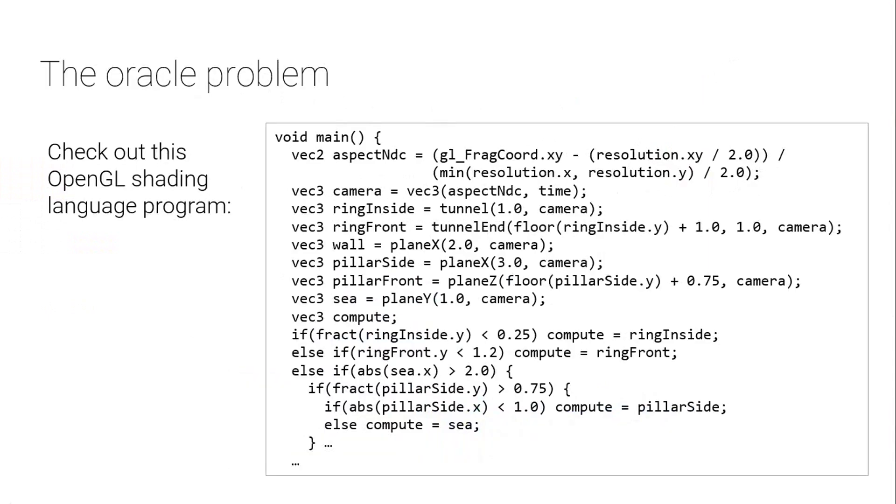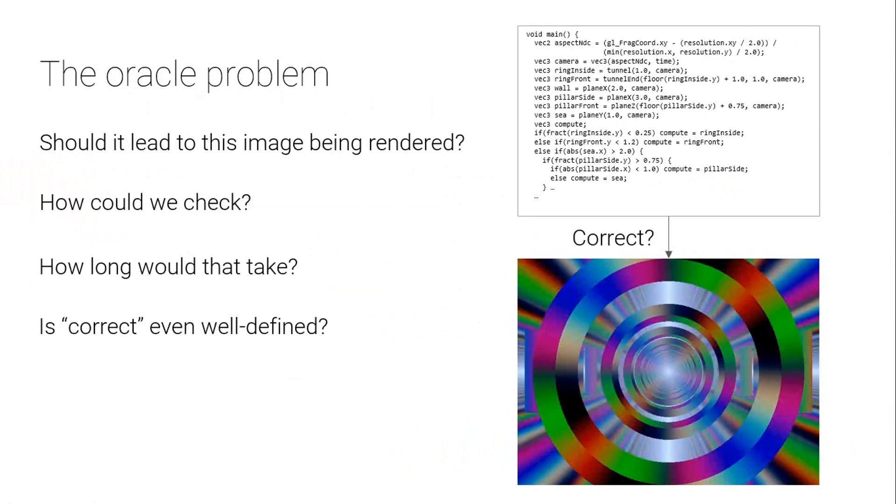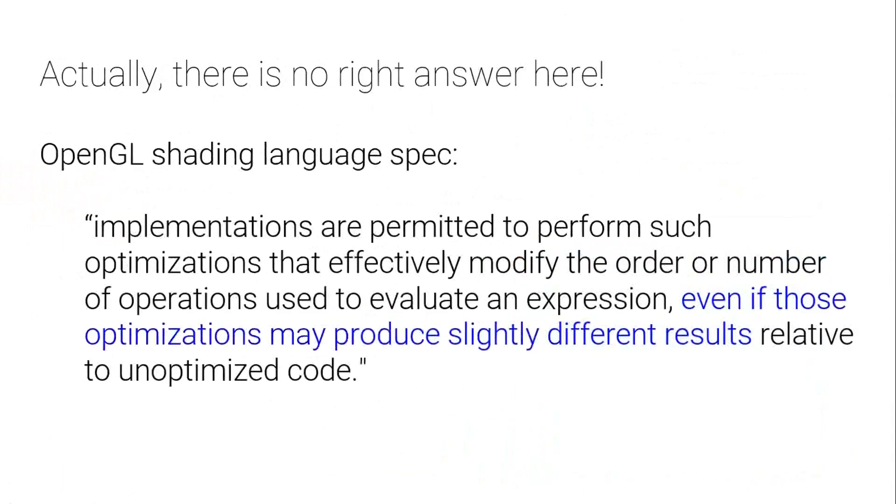If you were an OpenGL programmer, you would be able to understand this piece of code which looks a bit like C code. This is a piece of code called a fragment shader. This piece of code is used to render some graphics. And if you look at this code carefully, I wonder if you could answer me the question, should it render this image? So should this code lead to that image being rendered?